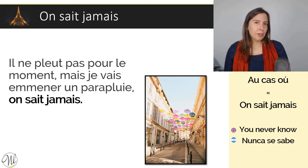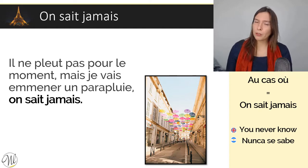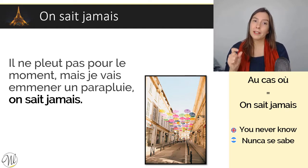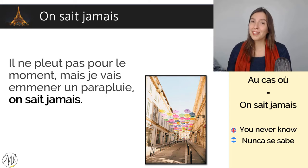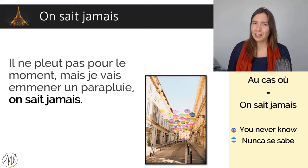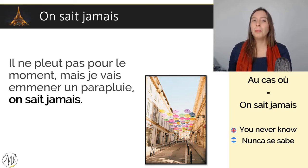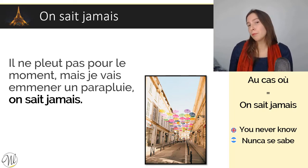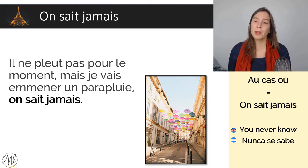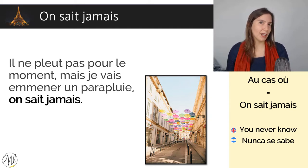And also another equivalent expression that is very common is on sait jamais. So here I omitted the negative ne — normally it should be on ne sait jamais, but because we never say the negative ne when speaking I didn't put it here. So : il ne pleut pas pour le moment, mais je vais emmener un parapluie, on sait jamais. On sait jamais there would be 'you never know', ou 'nunca se sabe'.